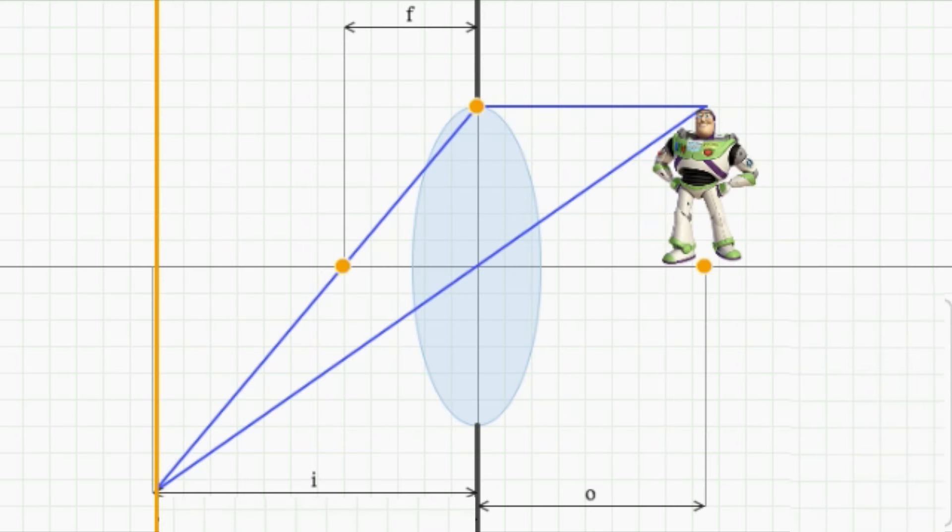In the previous exercise, you found that the simple lens law can be written as I equals O times F divided by O minus F. So if the image plane in our camera is at distance I, objects at distance O from the camera will come into crisp focus.